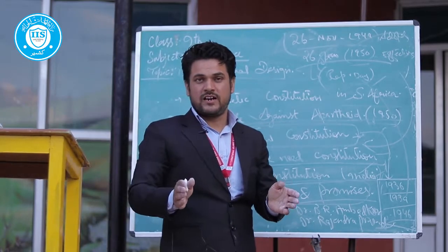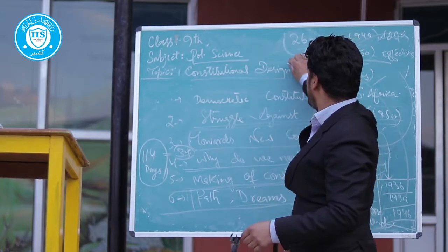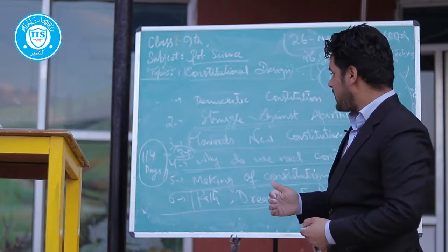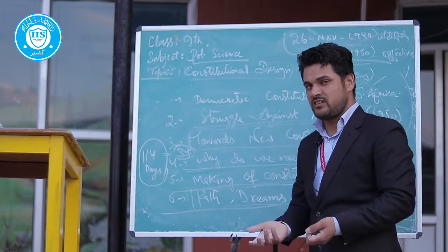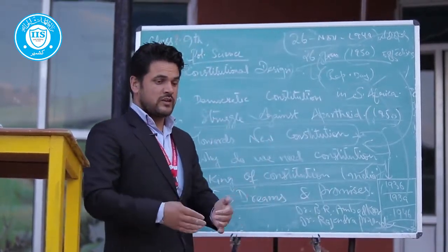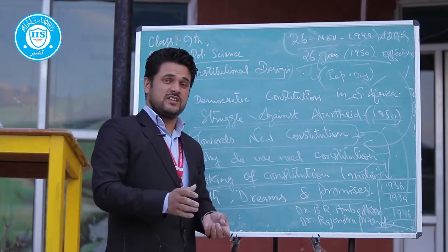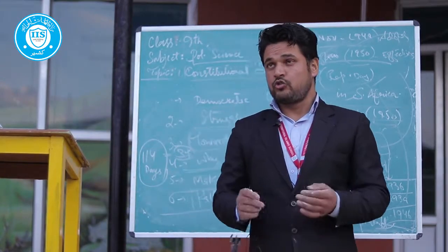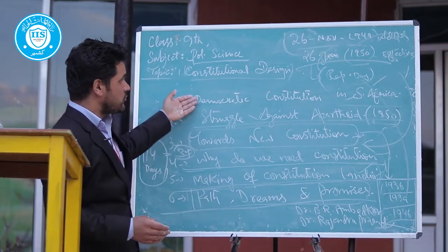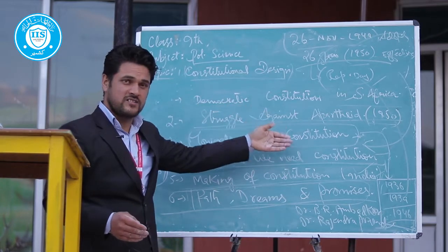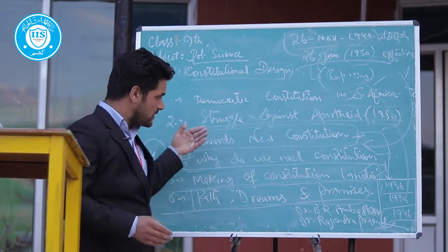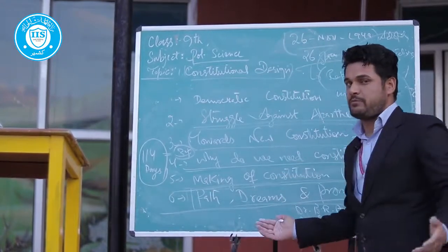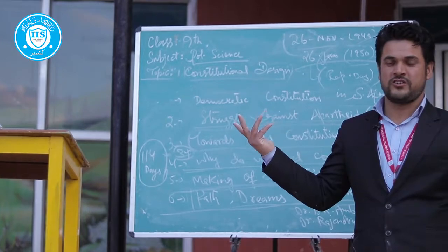So this was all about the chapter — constitutional design was discussed, one by one, all the topics. Countries like India and South Africa studied how to draft the constitution, and in the end created a democratic structure for the world. That is why India is one of the largest democracies in the world. Recapitulating: we discussed the democratic constitution in South Africa, the struggle against apartheid, towards the new constitution in Africa, why we need the constitution in India, the making of the constitution, and the path, dreams, and promises made by the government. Thank you. I hope you enjoyed. As-salamu alaykum.